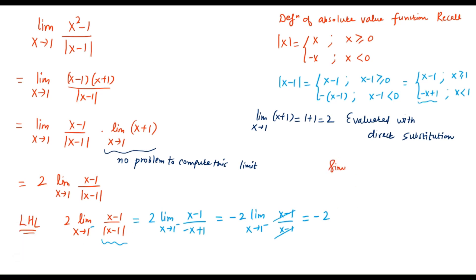Now it will be very easy for us to do the similar calculations for right hand limit as well. So if you compute right hand limit, this will be 2 times limit x goes to 1 from the right, (x minus 1) divided by mod of (x minus 1).